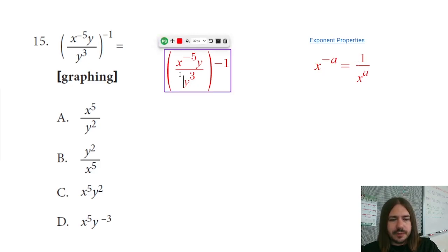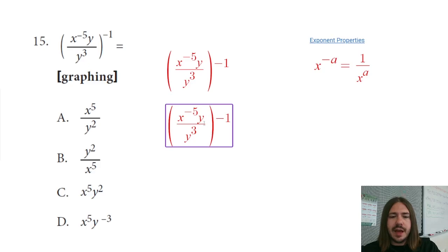But what I'm actually going to do here, a little unconventional, is I'm actually going to use this property backwards and try to rewrite this so there are no fractions involved, at least not up front. So this y cubed is really like one over y cubed. Y cubed's in the denominator.